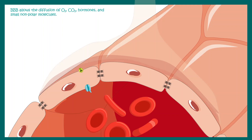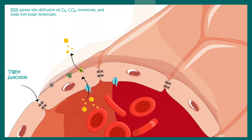Now let us focus only on the capillary endothelial cell. Tight junctions exist between these endothelial cells, and this tight junction is the key molecular component of the blood-brain barrier. Several transporters are also present in the endothelial cells which allow the transport of important substances such as glucose to the brain. Other transporters can allow the influx of several ions inside the brain.